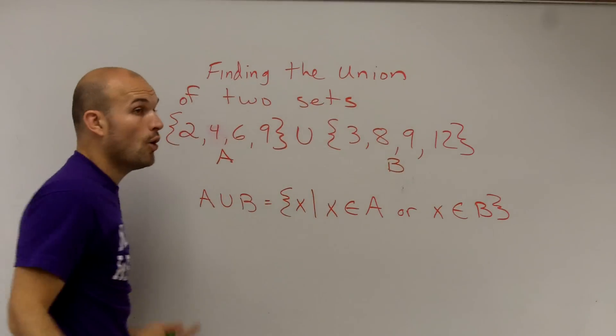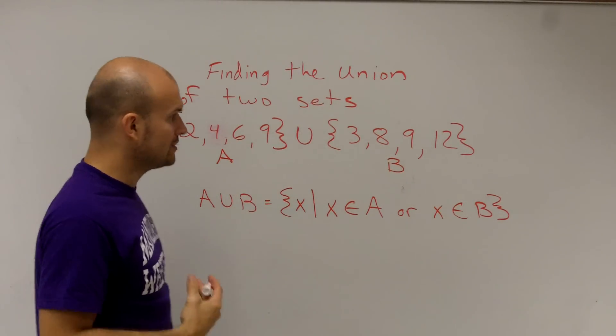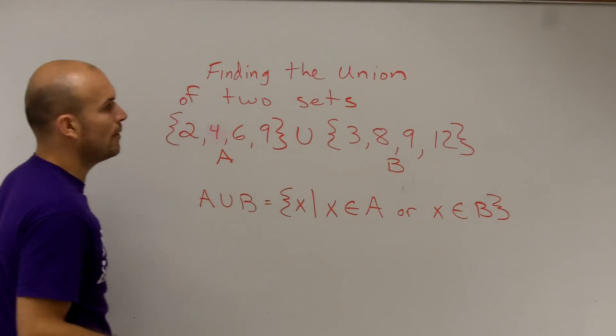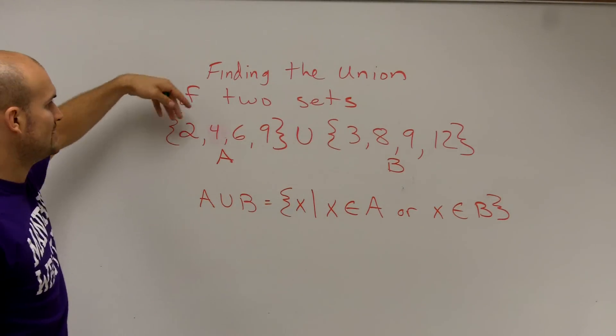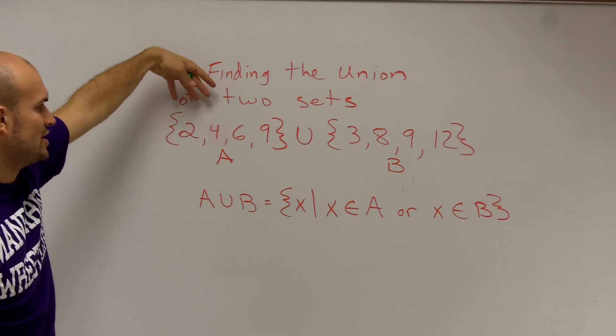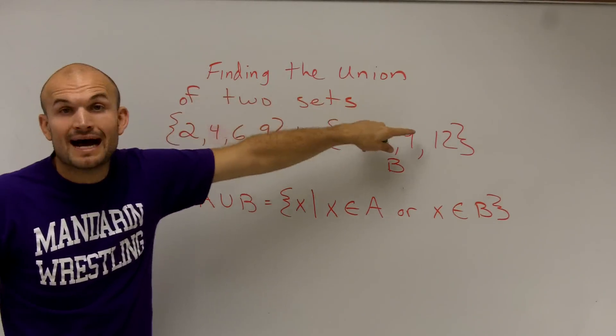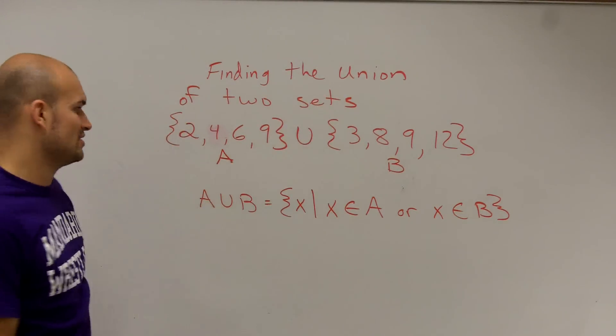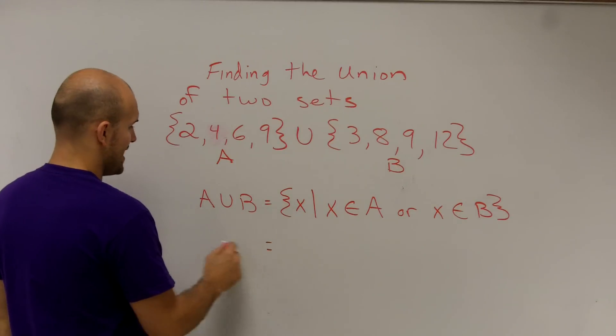We need to look at which members or elements are contained in either one of these sets or both of them. We notice that they don't share any members - actually, they both share nine. Since nine is in both of them, it is included, but I do not need to write it twice. So A union B is going to be ordered from least to greatest.